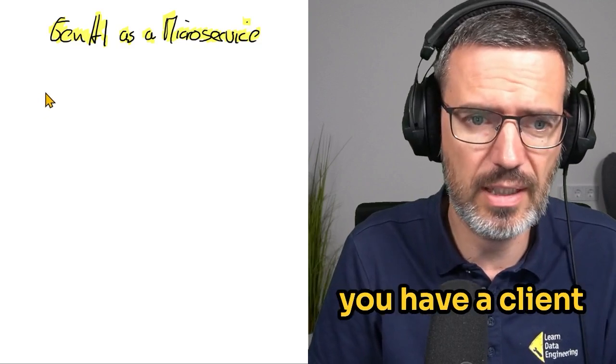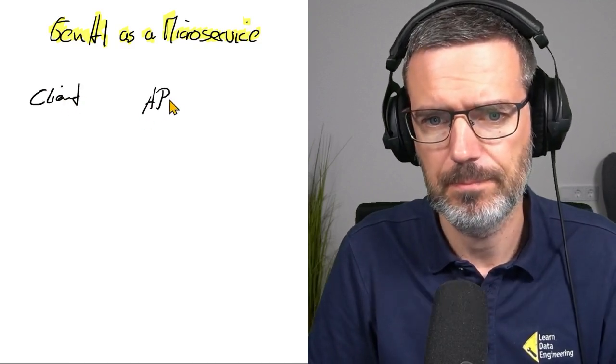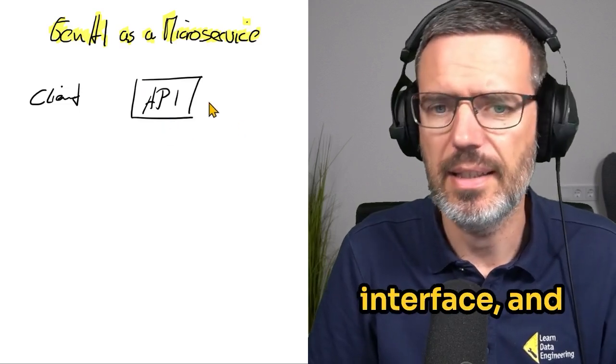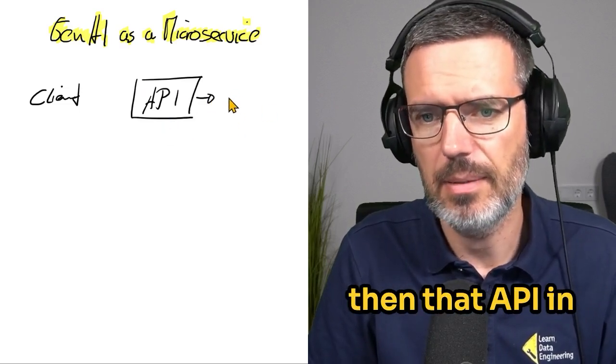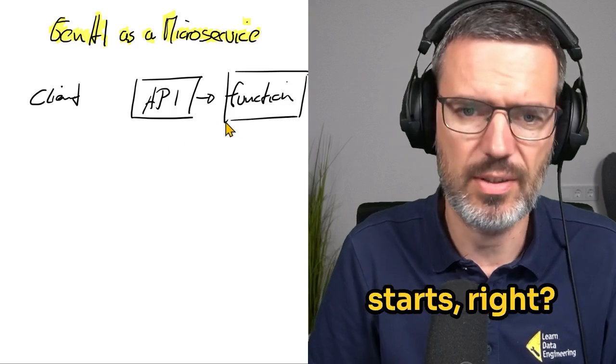So the idea of a microservice is you have a client and you have an API, Application Programming Interface, and then that API in the background has a function, a piece of code that it actually starts.